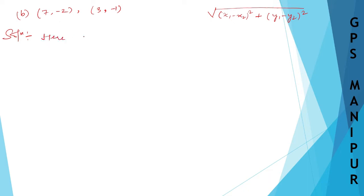So here, x1 is equal to 7, this one. x2 is equal to 3. y1 is equal to this number, -2.